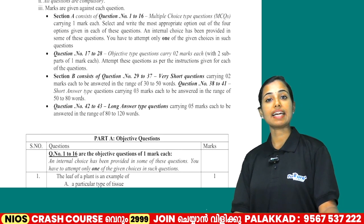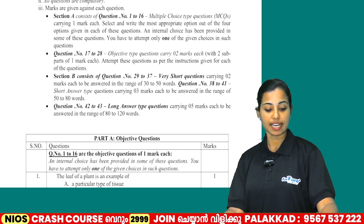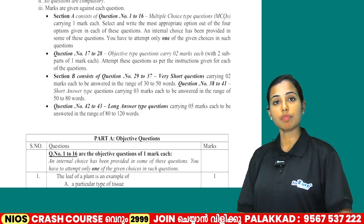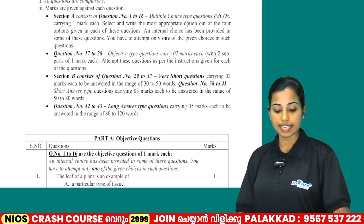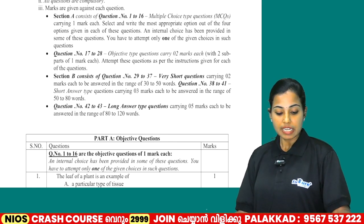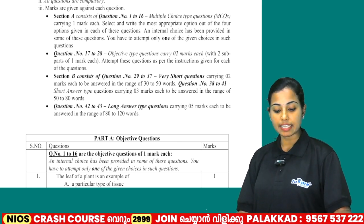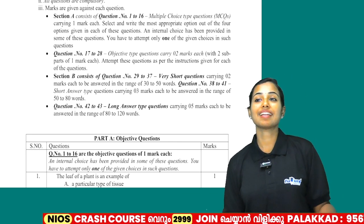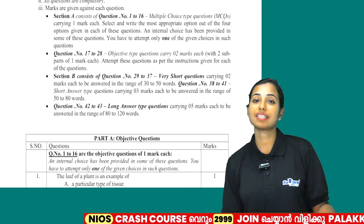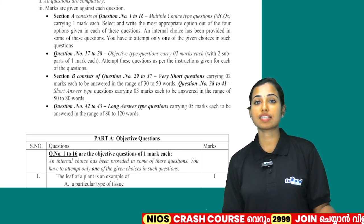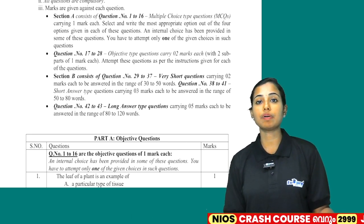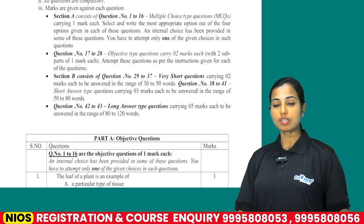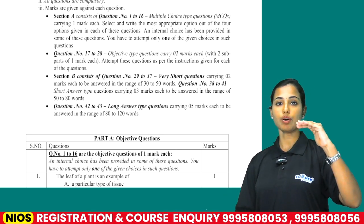The question paper will have 2 sections. Section A has 16 questions. These are multiple choice questions.